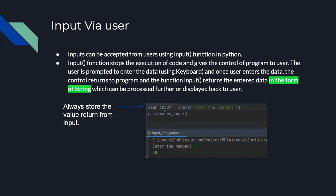In this example, we're creating a variable called user_input and assigning it a call to the input function. The input function accepts a parameter — what you want displayed to the user to tell them what kind of input you're looking for. It saves lines of code to put the prompt string directly inside the input function rather than printing it separately.